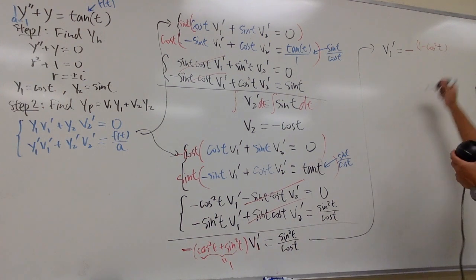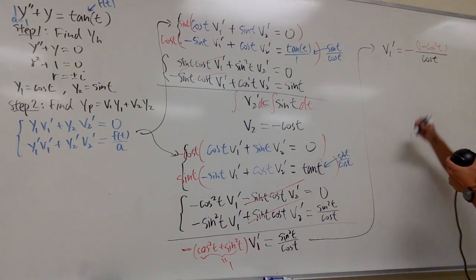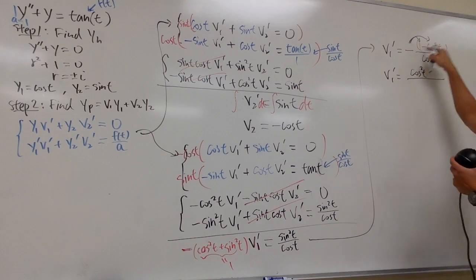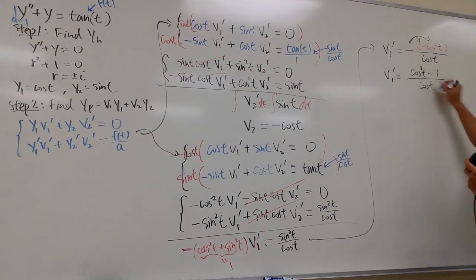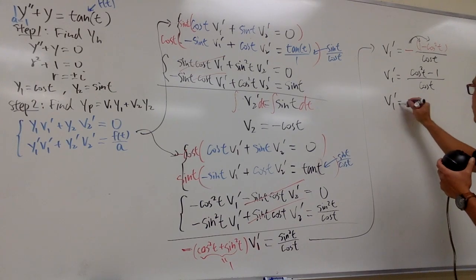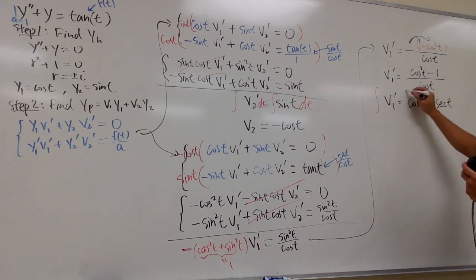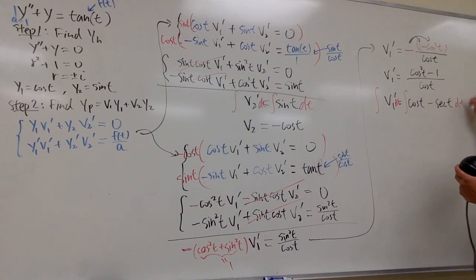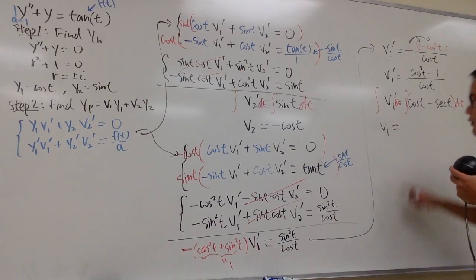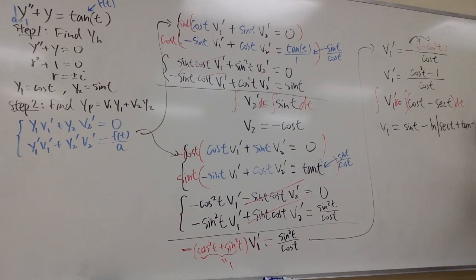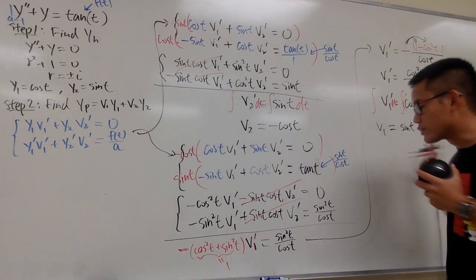Rewriting: φ1' equals (cosine squared t minus 1) over cosine t, distributing the negative. Splitting the fraction: φ1' equals cosine t minus secant t. Integrating both sides: φ1 equals sine t minus ln|secant t plus tangent t|. Do not add a plus C here.